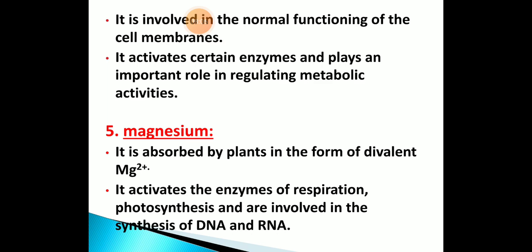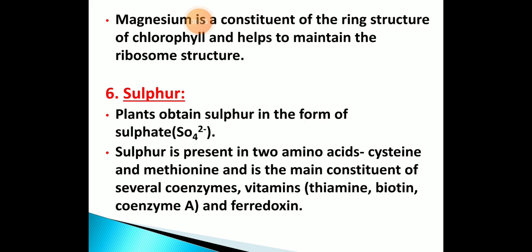Certain enzymes play an important role in regular metabolic activity — that is the role of calcium. Magnesium is absorbed in the form of divalent Mg²⁺ ions. It activates enzymes of respiration and photosynthesis, and is involved in the synthesis of DNA and RNA. Magnesium also constitutes the ring structure of chlorophyll and helps in maintaining ribosome structure. Sulphur is absorbed as SO4²⁻ and is present in two amino acids — cysteine and methionine — and is also used in thiamine and other co-vitamins.